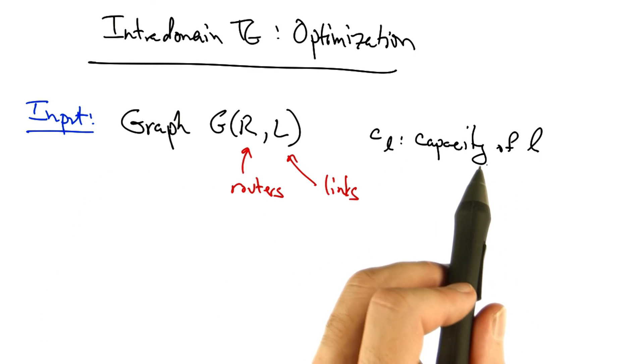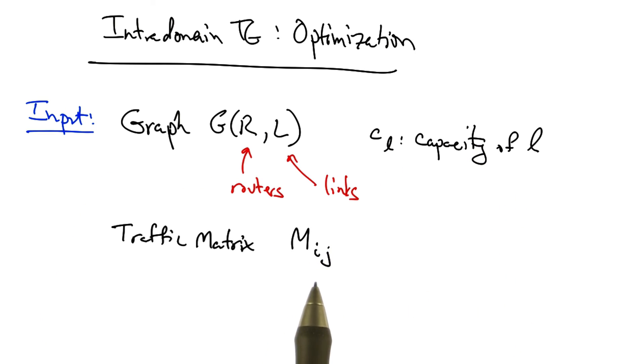Each link L also has a fixed capacity. Another input is the traffic matrix, or the offered traffic load.